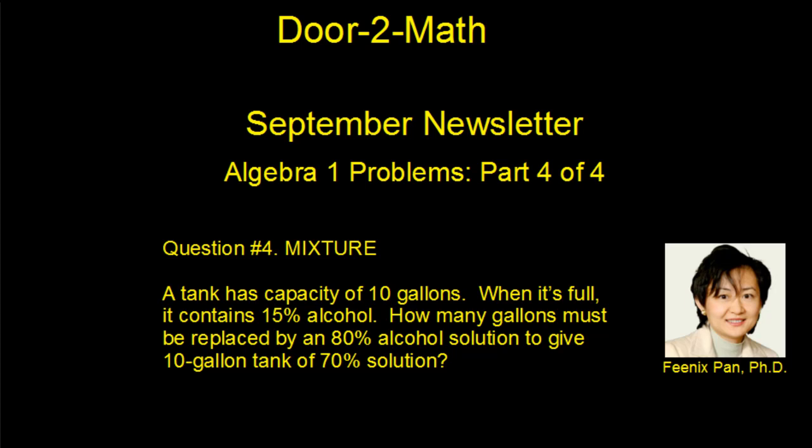In this problem, we're dealing with a classic chemical mixture. A tank has a capacity of 10 gallons. When it's full, it contains 15% of alcohol. How many gallons must be replaced by an 80% alcohol solution to give a 10 gallon tank of 70% solution?